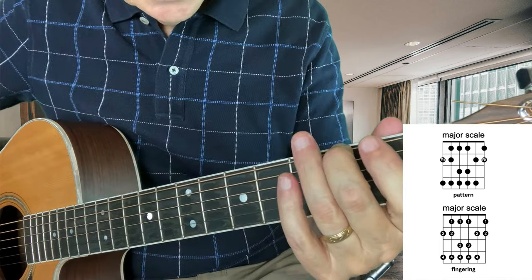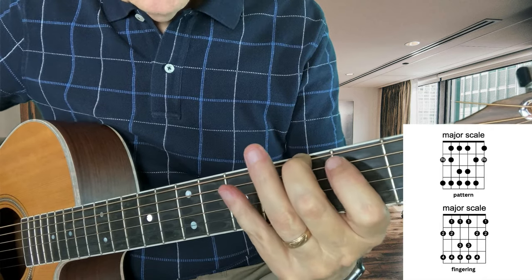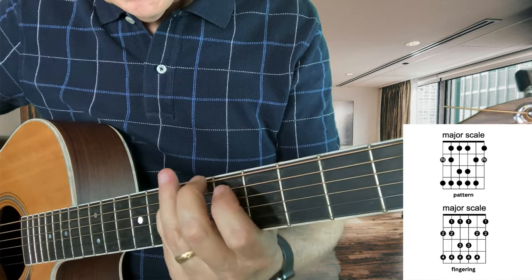This first scale starts in the key of F sharp. But we move up one fret, now we're in G. We move up two frets, we're in A.